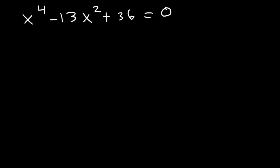We're going to factor by substitution. Let's pick a variable — let's say a. We'll set a equal to the middle variable, which is x squared. So if a is x squared, then a squared is x to the fourth.